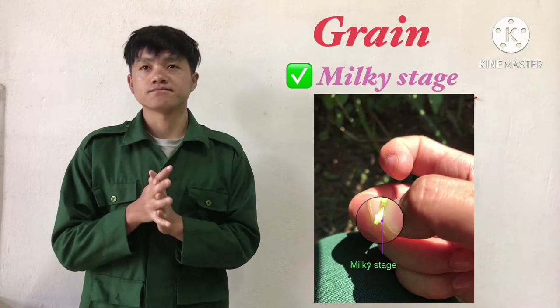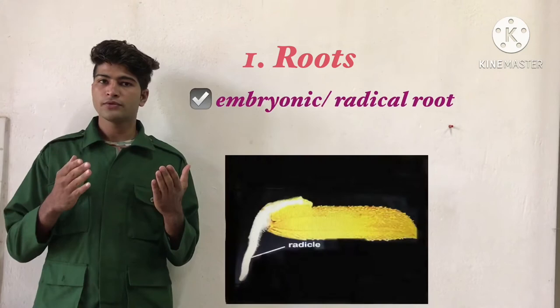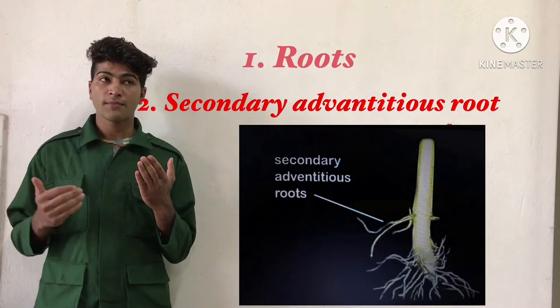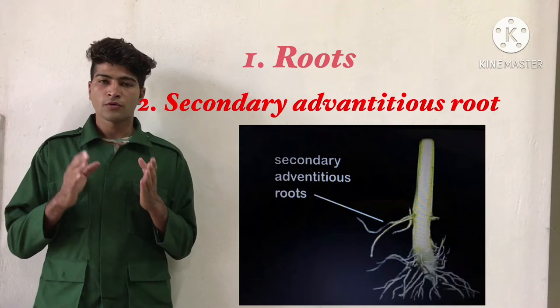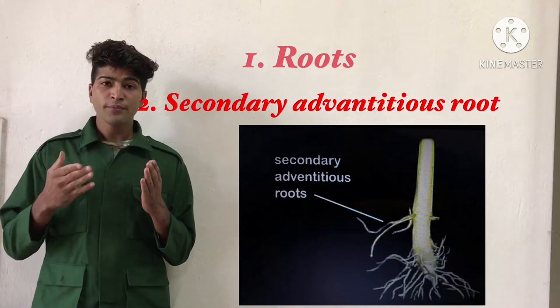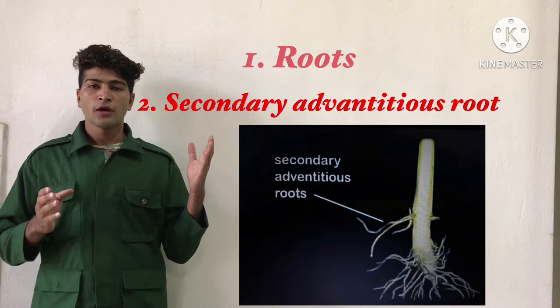While visiting the field, we observed that most of the grains were in the milky stage and some were about to mature. Regarding roots, there are two types: embryonic root and secondary adventitious root. We observed the secondary adventitious root, which is long and elongated and can cling to soil particles very well. It supports the plant from growth to maturity stage, replaces embryonic roots, and also helps prevent soil erosion.